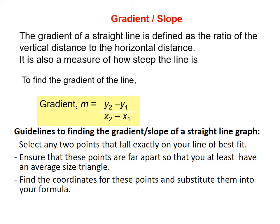Now, there are certain guidelines you want to consider when you're finding the gradient or slope of a straight line graph. The first one is you select any two points that fall exactly on your line of best fit. Then you want to ensure that these points are far apart so that you at least have an average-sized triangle. And then you will find the coordinates for these points and substitute them into your formula, y2 minus y1 divided by x2 minus x1.